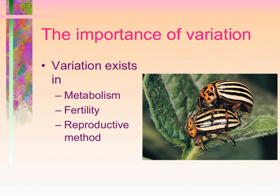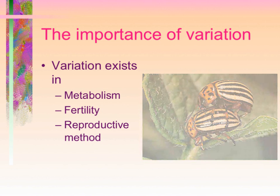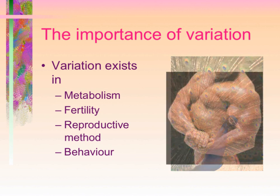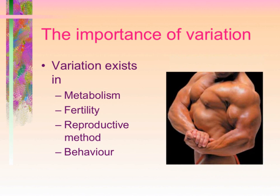Variation exists in reproductive method — whichever system seems to work best for that organism is the one that's used over and over. Variation exists in behavior as well; an organism is going to behave in a certain way to attract a mate that produces the best chance of that organism's survival, even though some behavioral characteristics do vary.